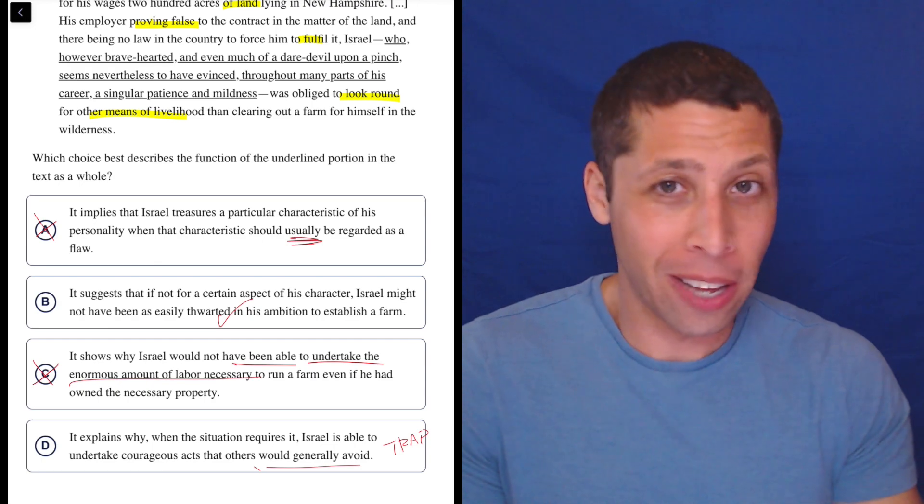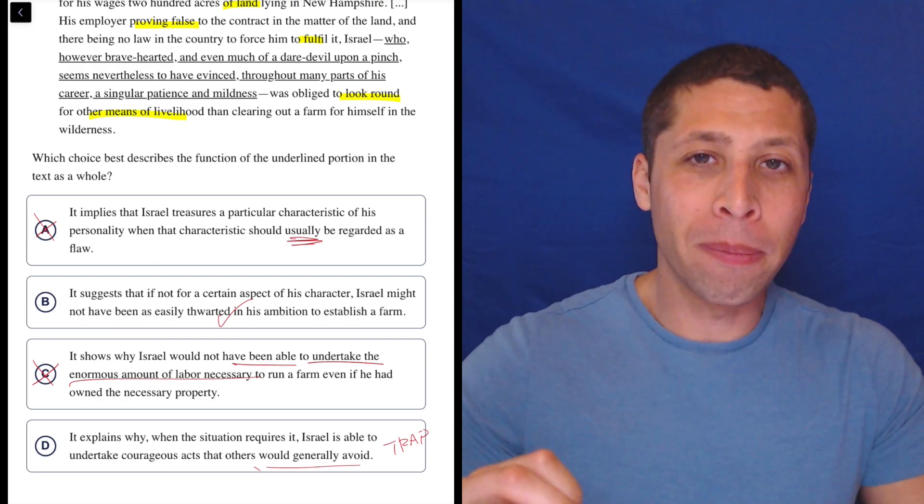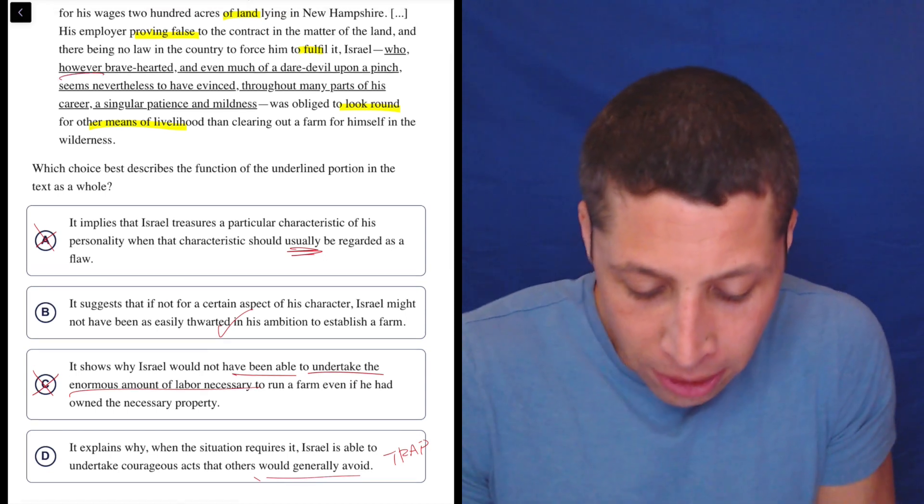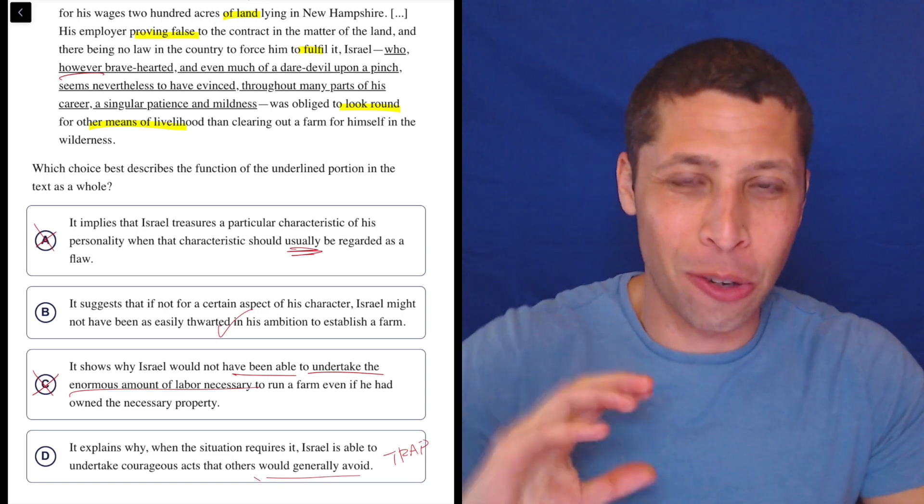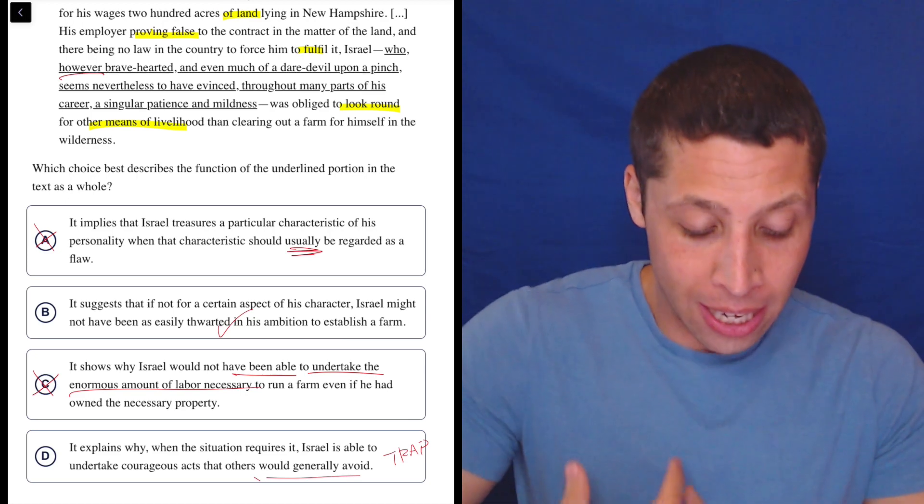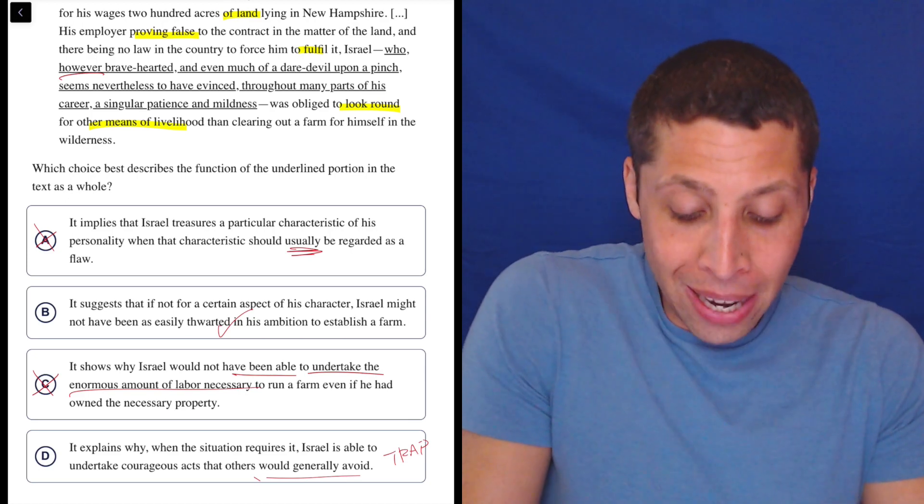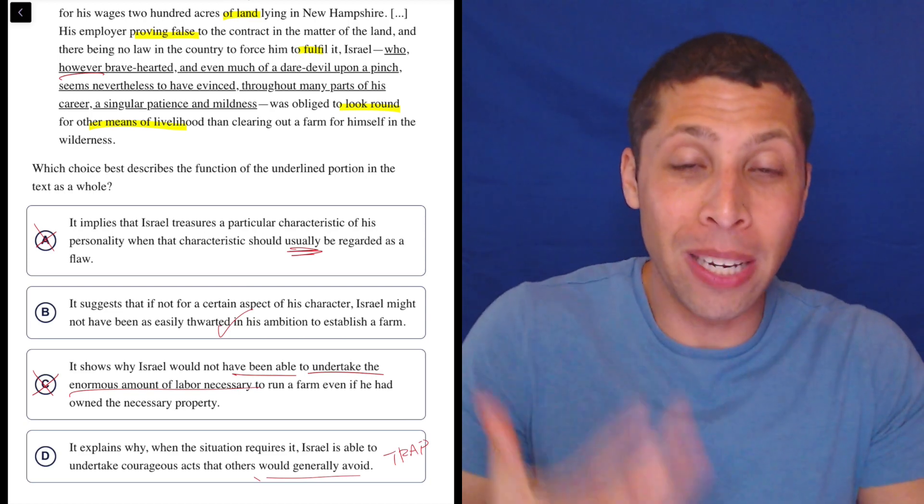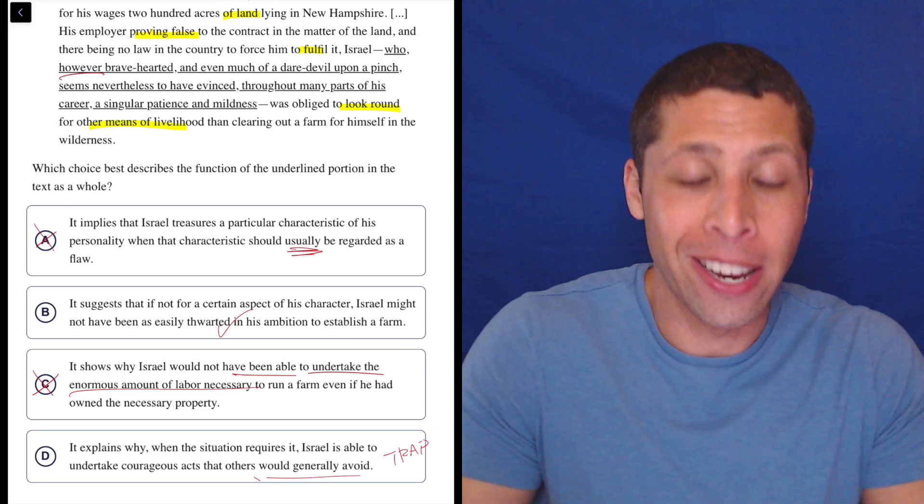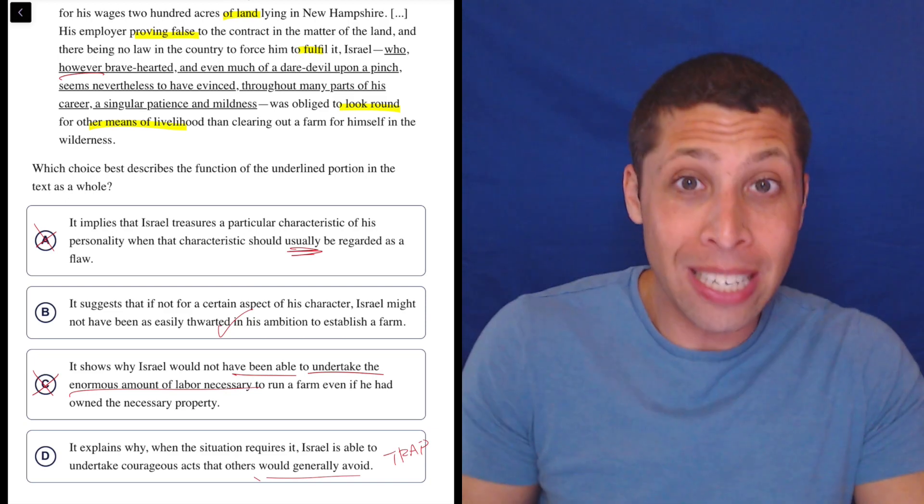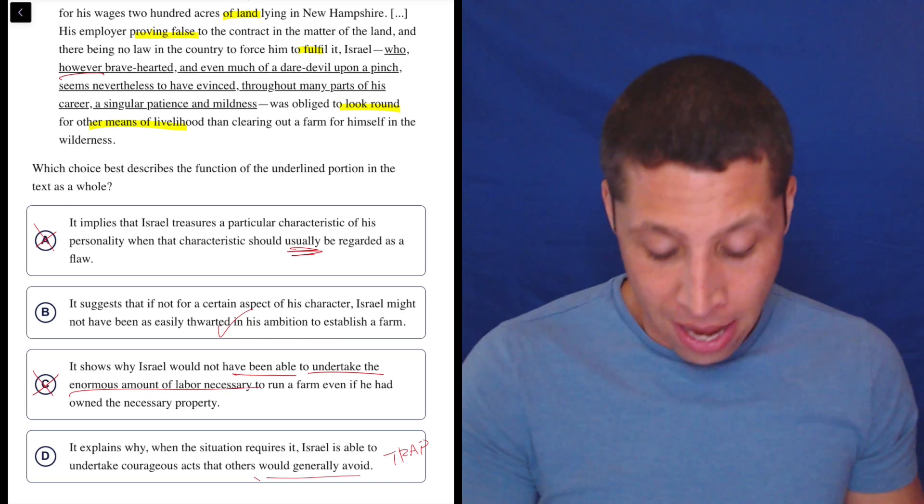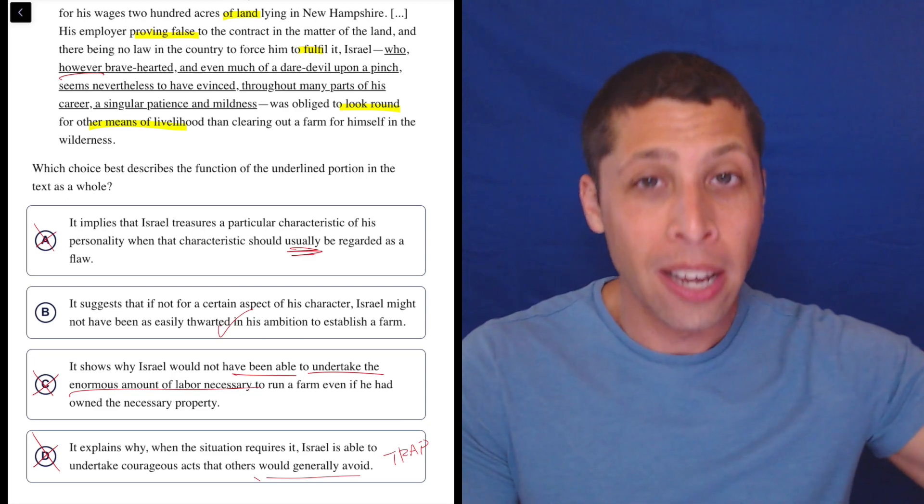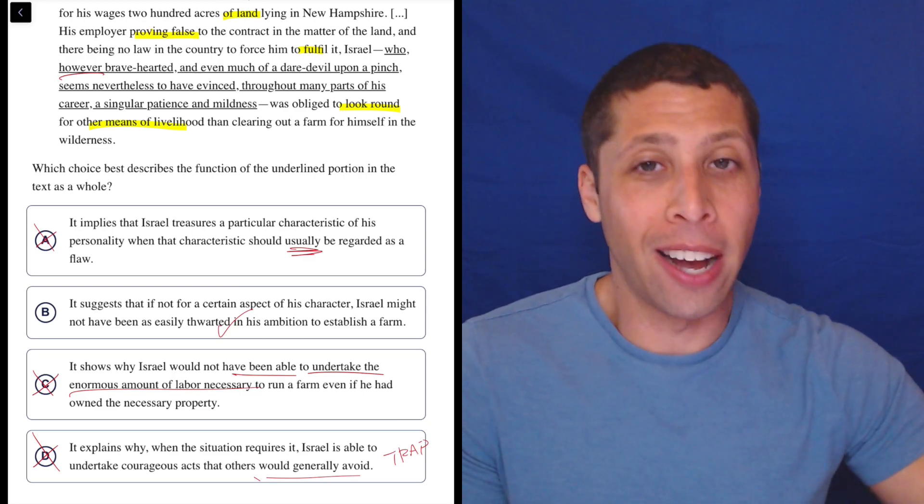But second of all, he's not standing up for himself, right? The rest of the passage is telling us that he's just like, oh, well, so much for the farm. That's it, right? So the problem is that however bravehearted and even much of a daredevil upon a pinch. So right, this however here is kind of, it's not quite the same as when we use it in the transition questions, but it's behaving similarly. They're saying he is bravehearted. He is a daredevil on a pinch, but he seems nevertheless to have been throughout his career, more patient and mild, meaning he's not using that personality trait of being bravehearted. He's not advocating for himself for whatever reason, right? It just didn't happen. So he is not undertaking any courageous acts, at least not in this situation, even though maybe in others he could. Here, they're saying he's not being brave. He's just letting it happen.